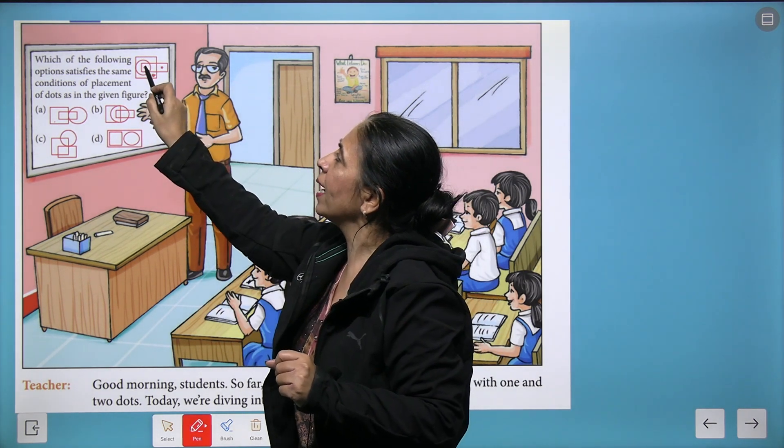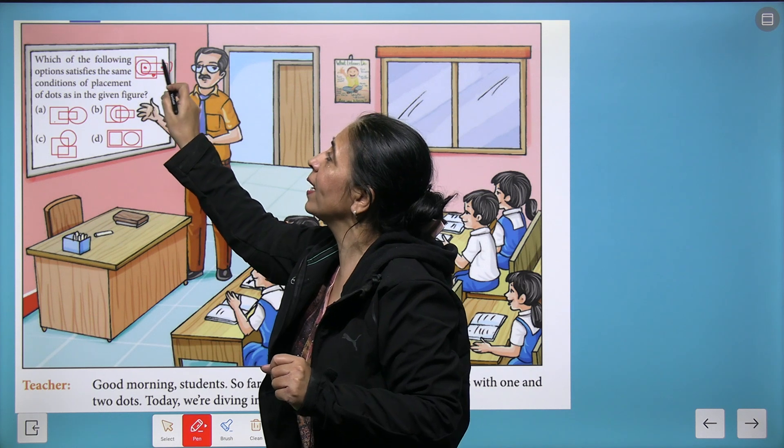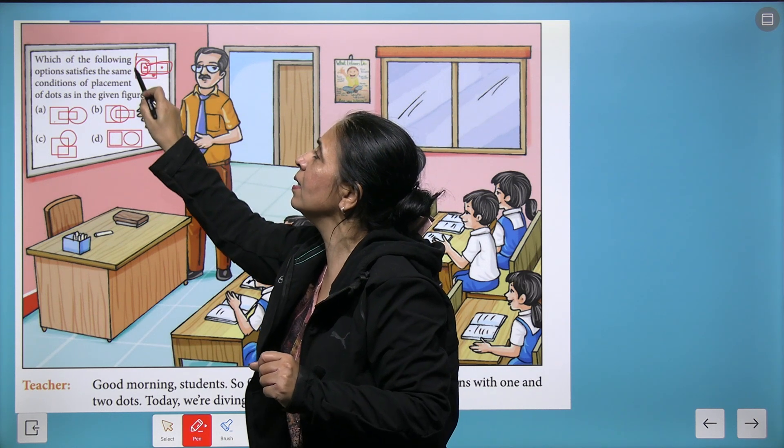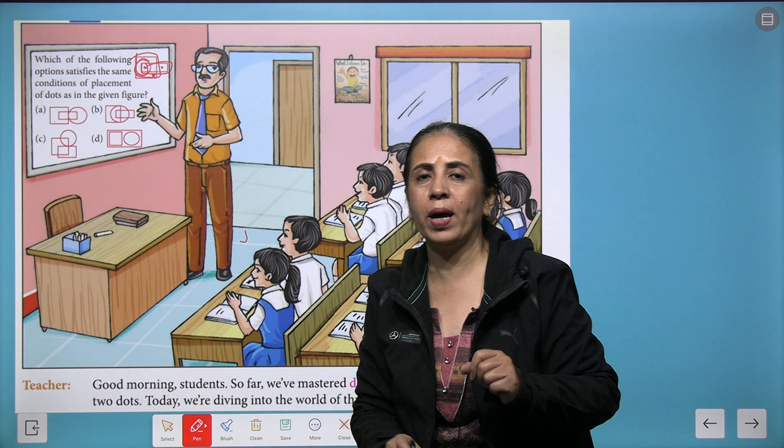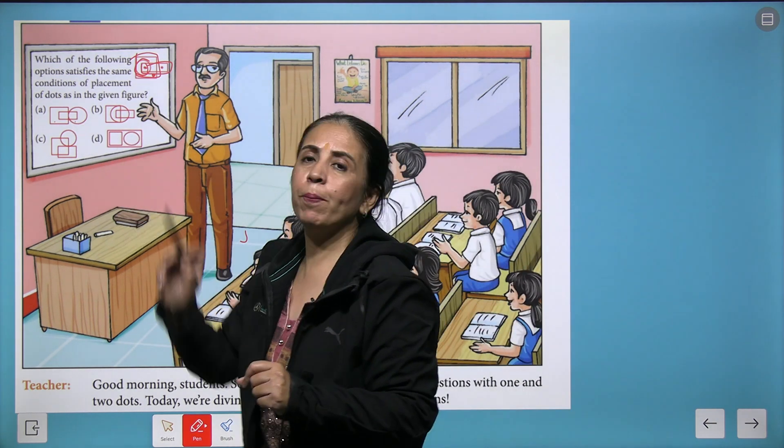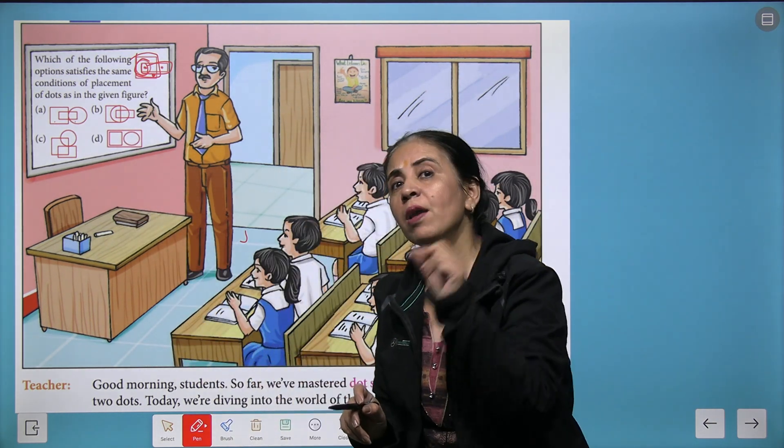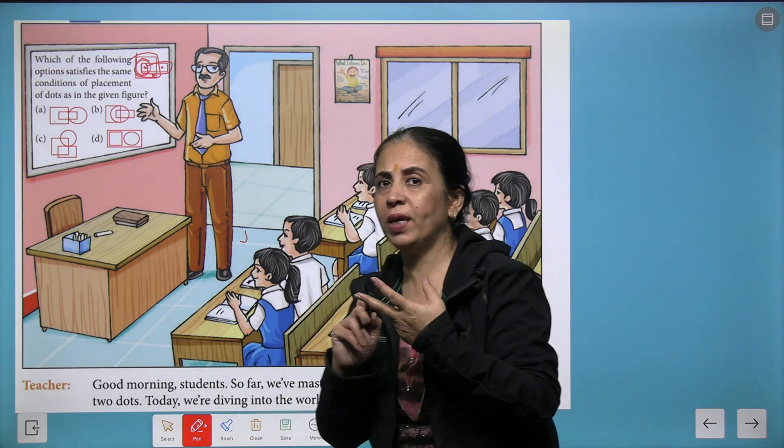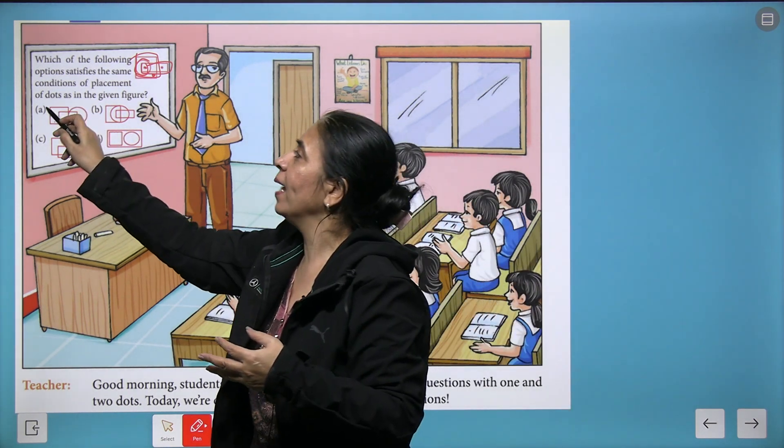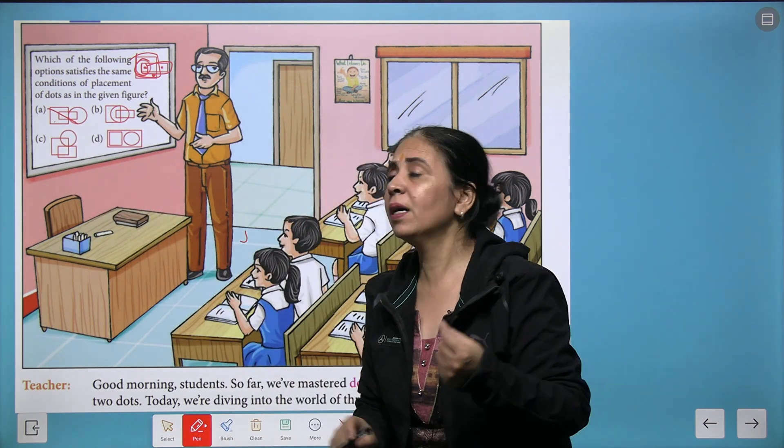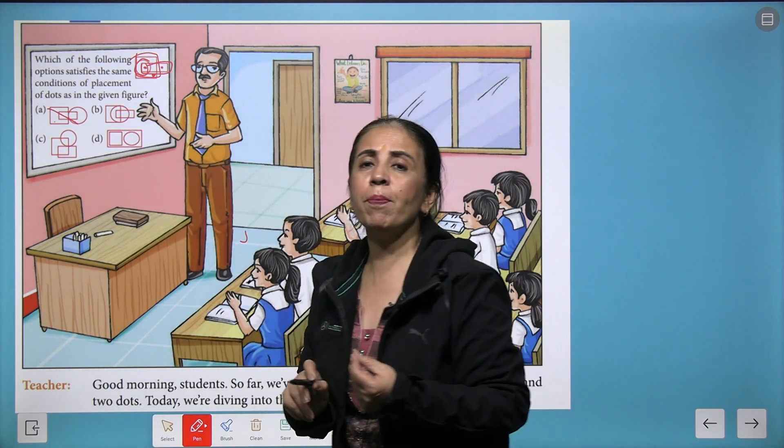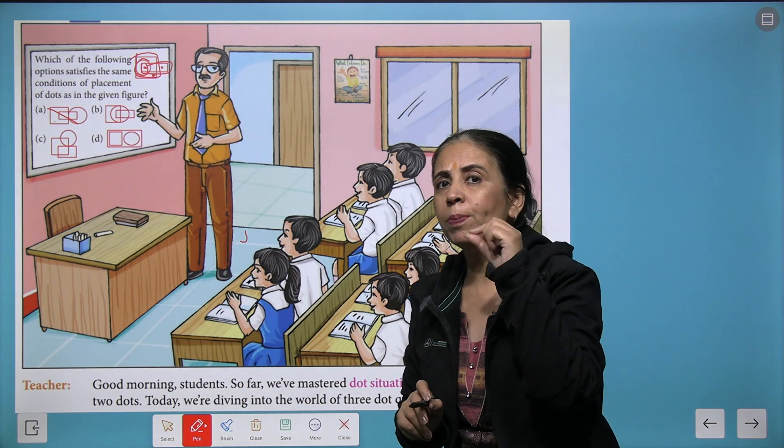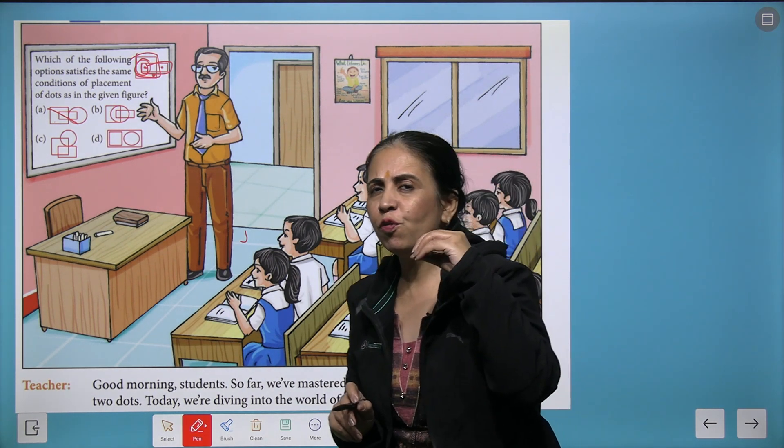This second dot exists in the rectangle, in the circle, as well as in the square. Here it won't be possible because we can't find any space which is the part of all three shapes, so we cancel it out. Similarly, look at part C. If you observe the figure, can you find the space where all three figures have a common area?